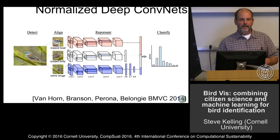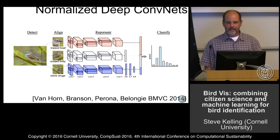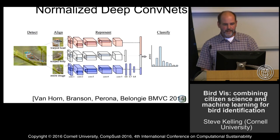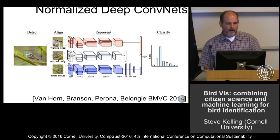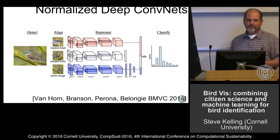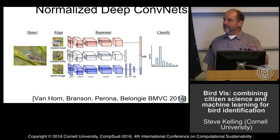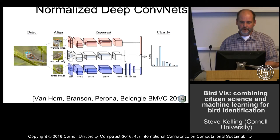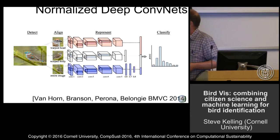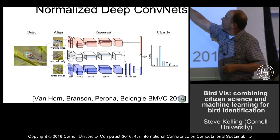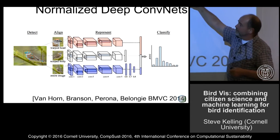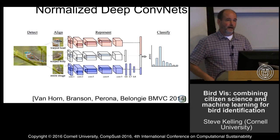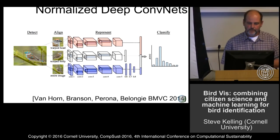The model is a neural net — basically three neural nets. They take the information about the bird, they take the probability matrix from eBird, and then they give us a probability histogram of what the species is that's reported.